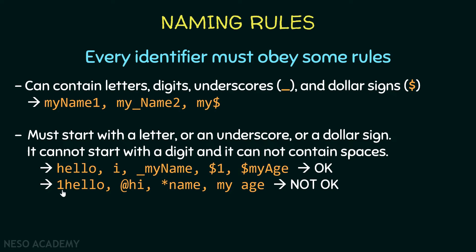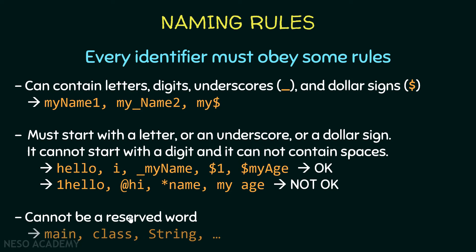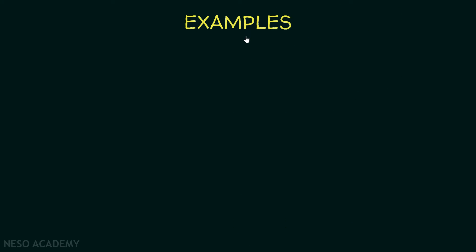Finally, if we want to create an identifier — for example, give a name to a variable — it cannot be a reserved word. So it cannot be, for example, main, class, or String. These are Java keywords, and we cannot create an identifier that is the same as these keywords.